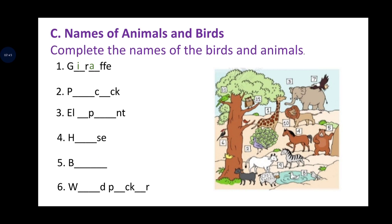Number two is peacock. P-E-A-C-O-C-K, peacock. Number three is elephant. E-L-E-P-H-A-N-T, elephant. Number four is horse. H-O-R-S-E, horse. The fifth picture is bear. B-E-A-R, bear. Number six is woodpecker. W-O-O-D-P-E-C-K-E-R, woodpecker.